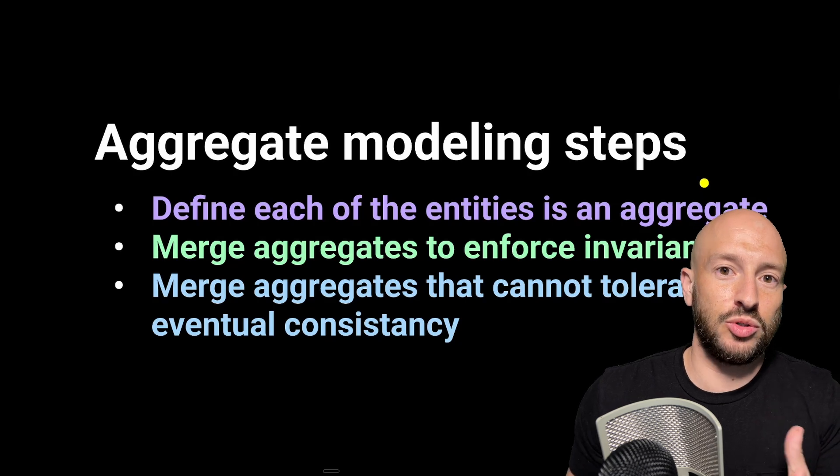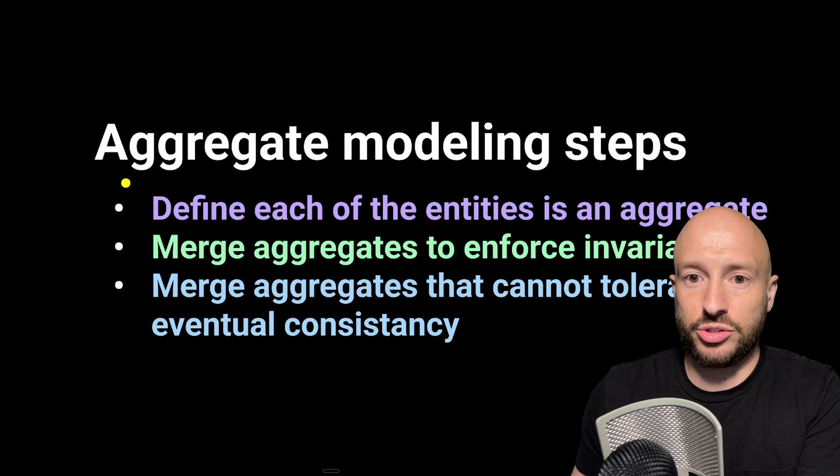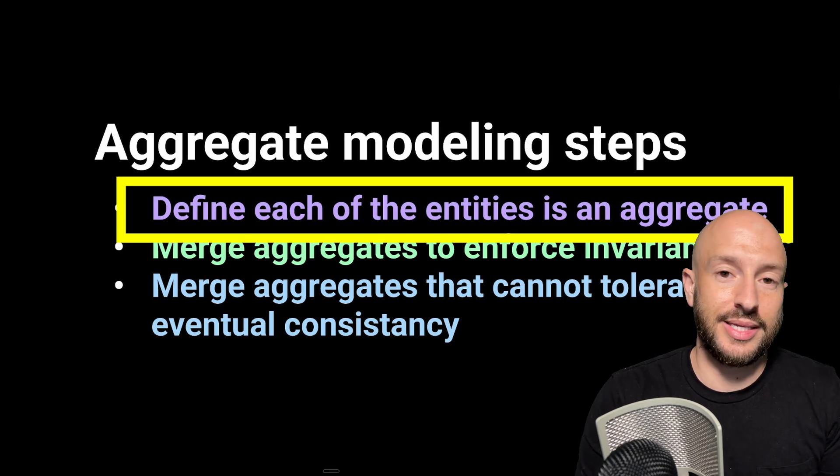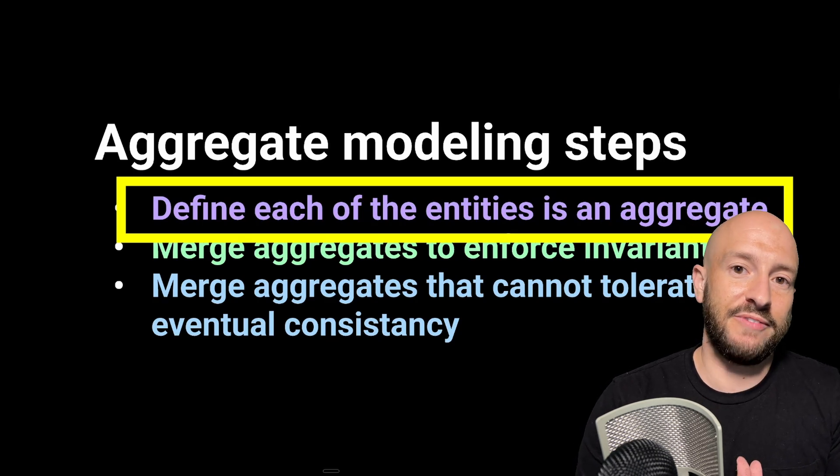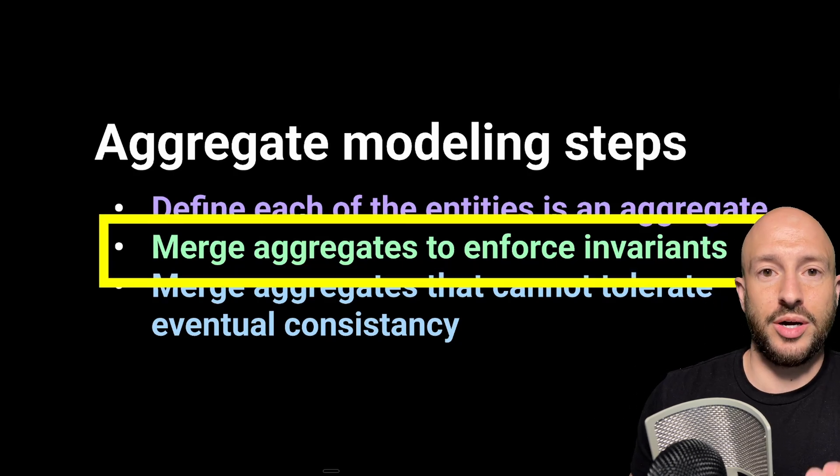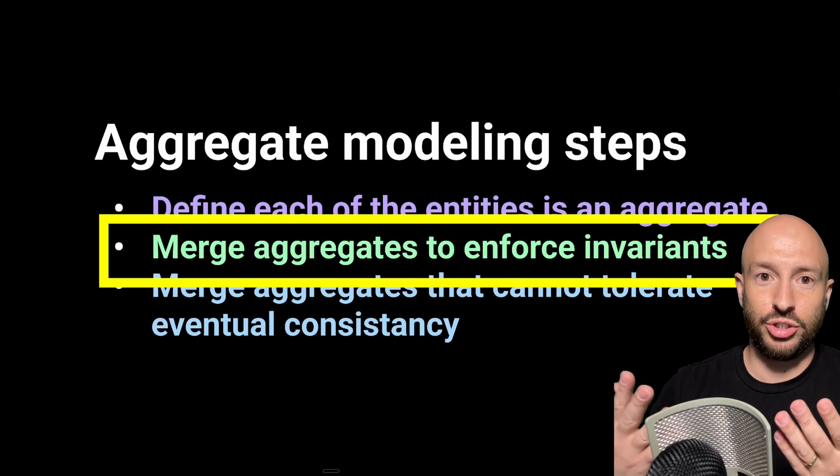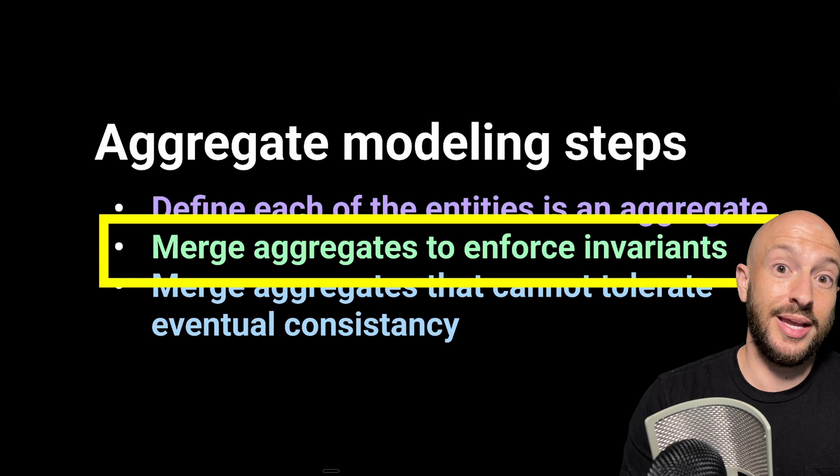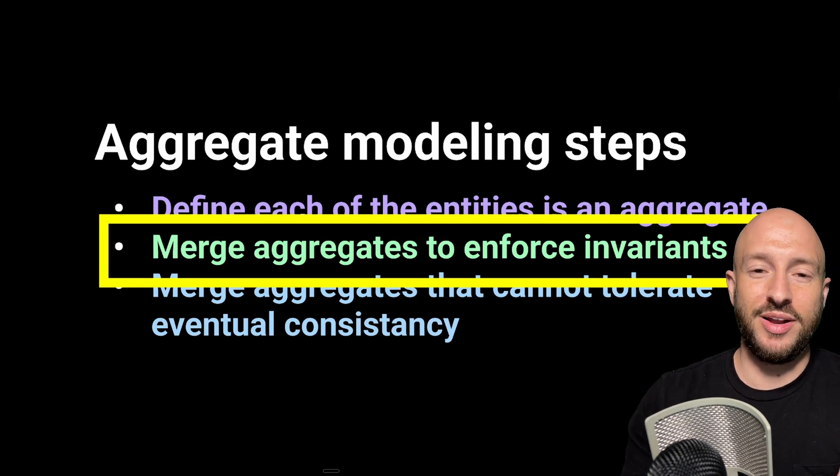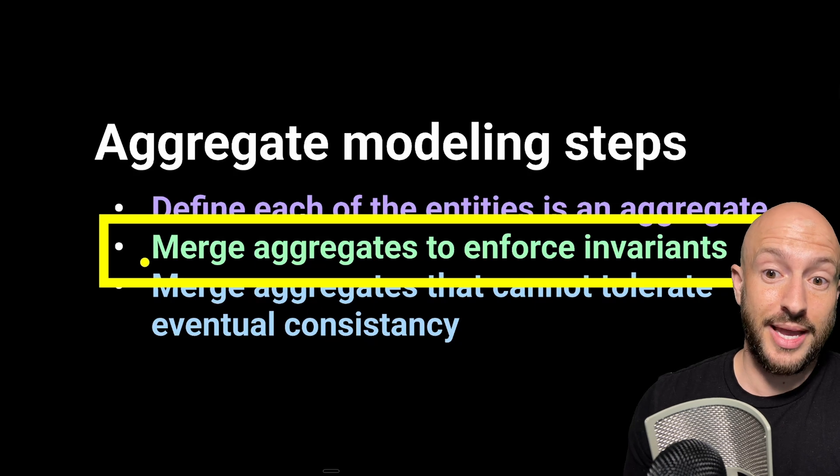Moving on to actual practical steps of modeling your domain, then like we said, we want smaller aggregates. So the first step is taking each one of your entities and defining it as an aggregate, then based on your invariance, then you merge the different aggregates into one aggregate. So in our case, that would take the reservation entity and move it inside the dinner entity.